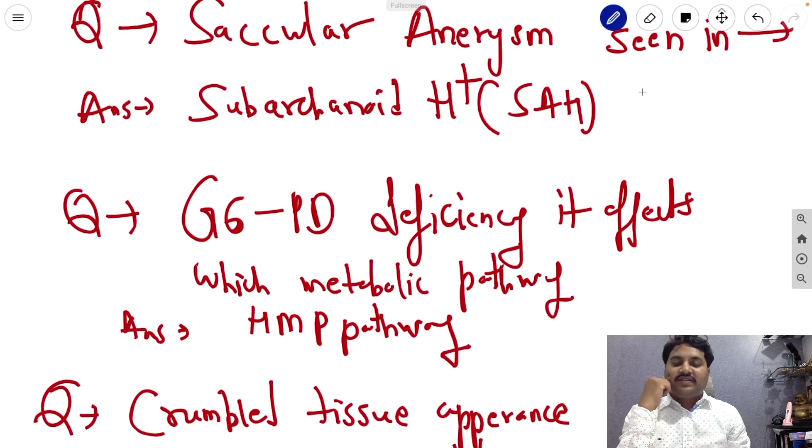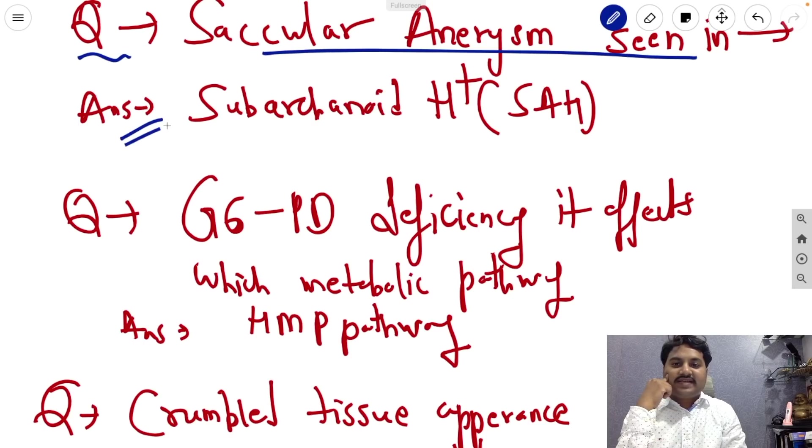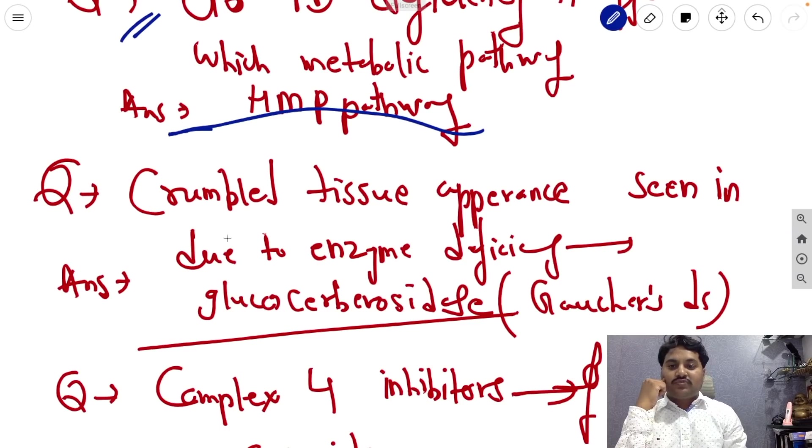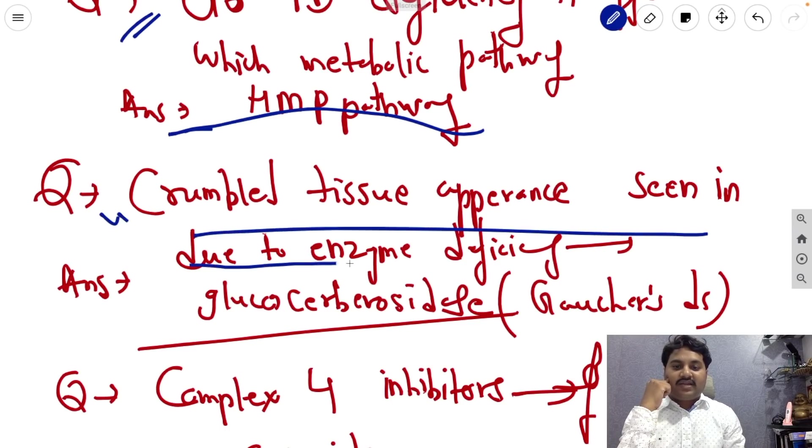So my dear friends, the next question is saccular aneurysm is seen in subarachnoid hemorrhage. Next question, G6PD deficiency, it affects which metabolic pathway? The answer is HMP pathway. Next question, crumbled tissue appearance seen in which type of enzyme deficiency? The answer is glucocerebrosidase deficiency, that is seen in Gaucher's disease.